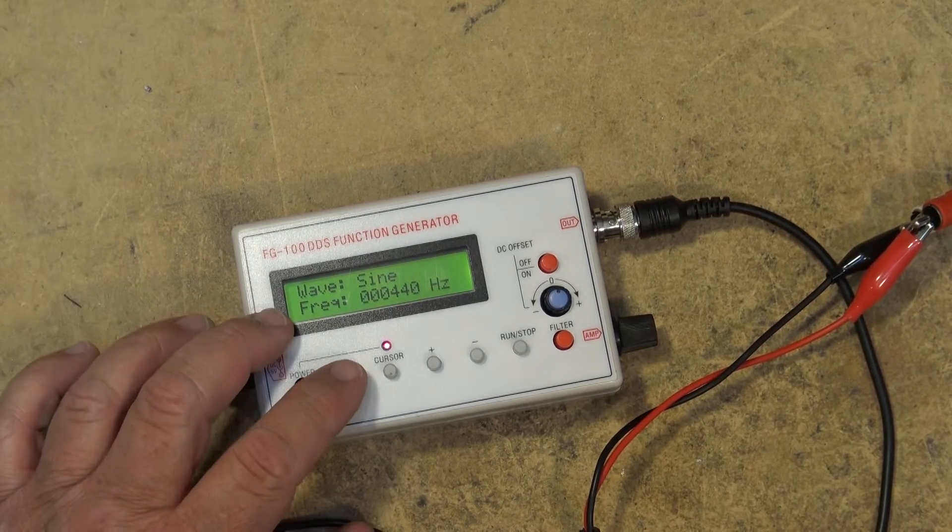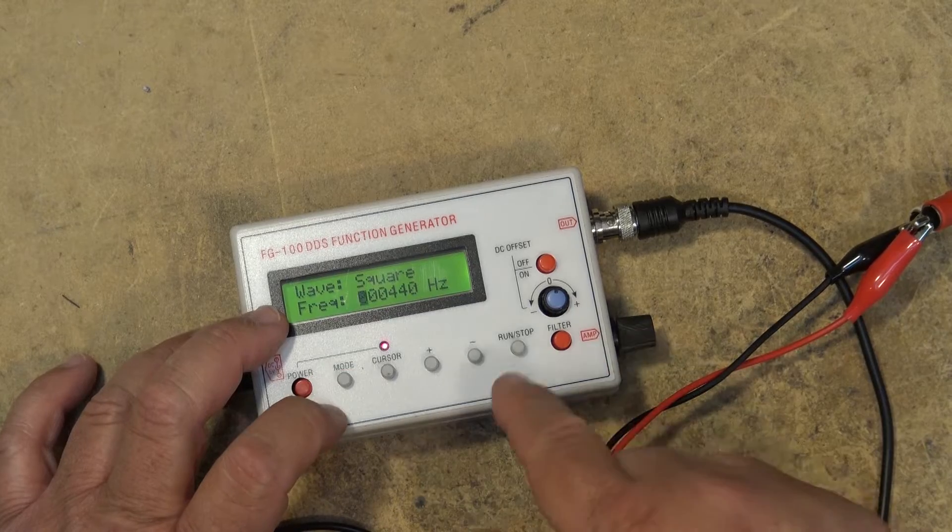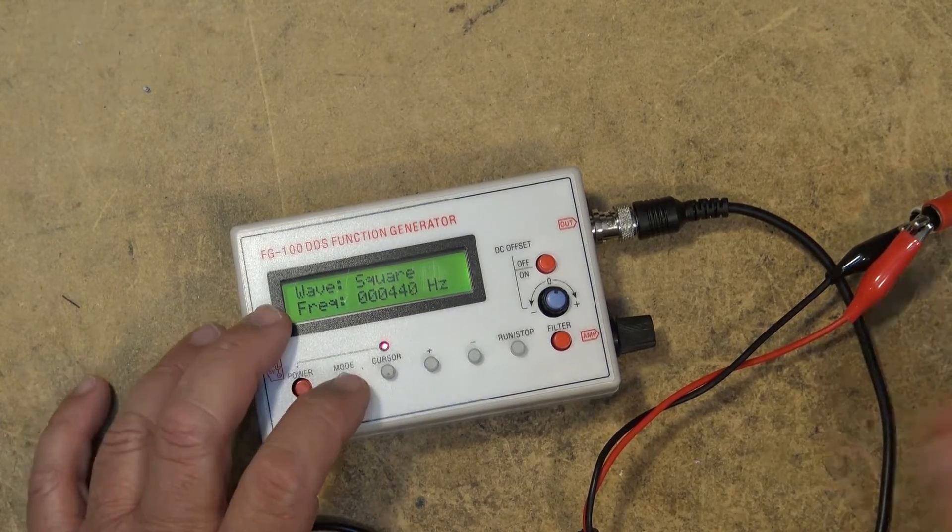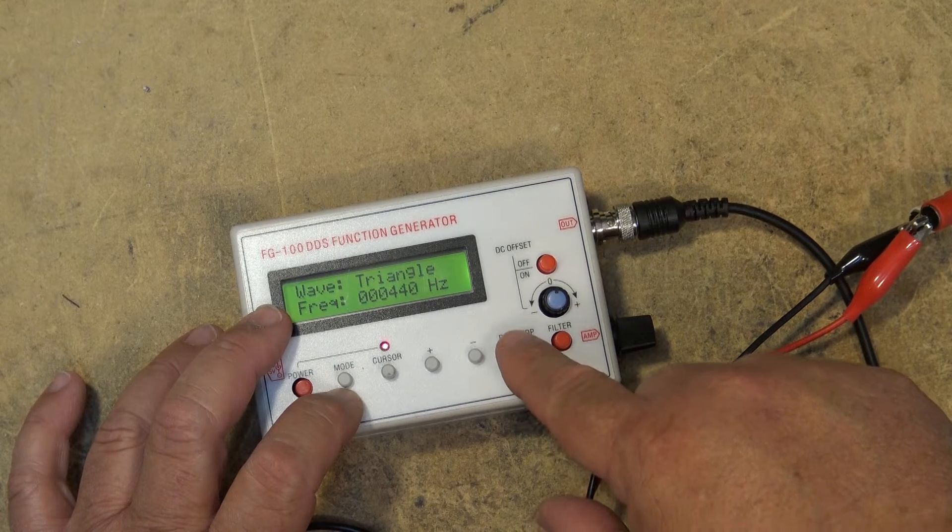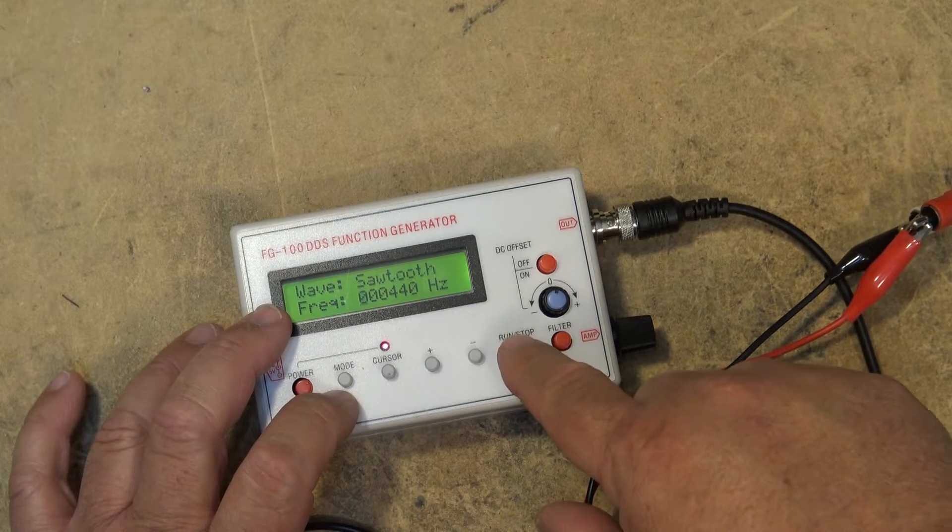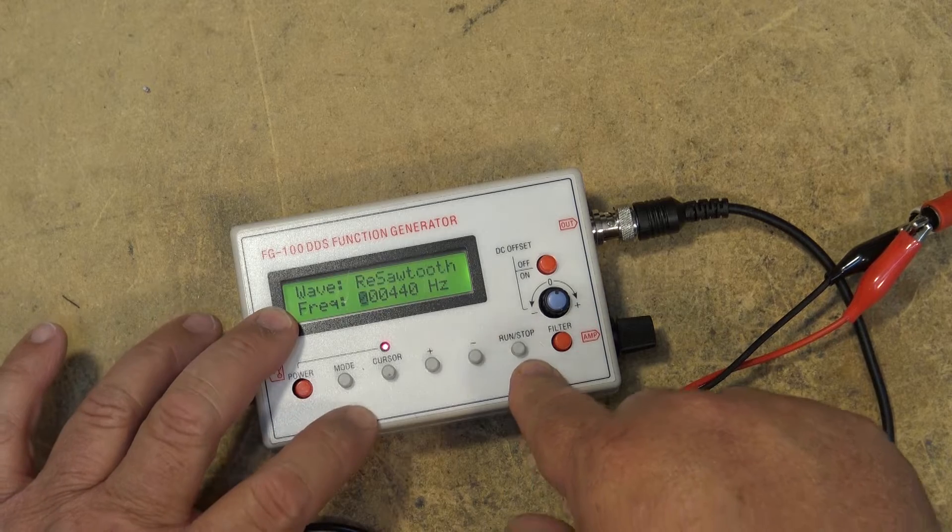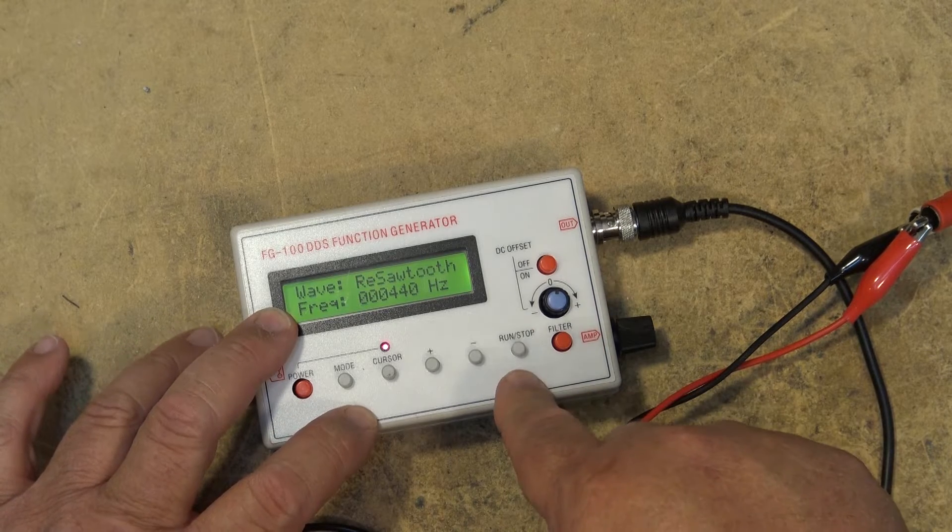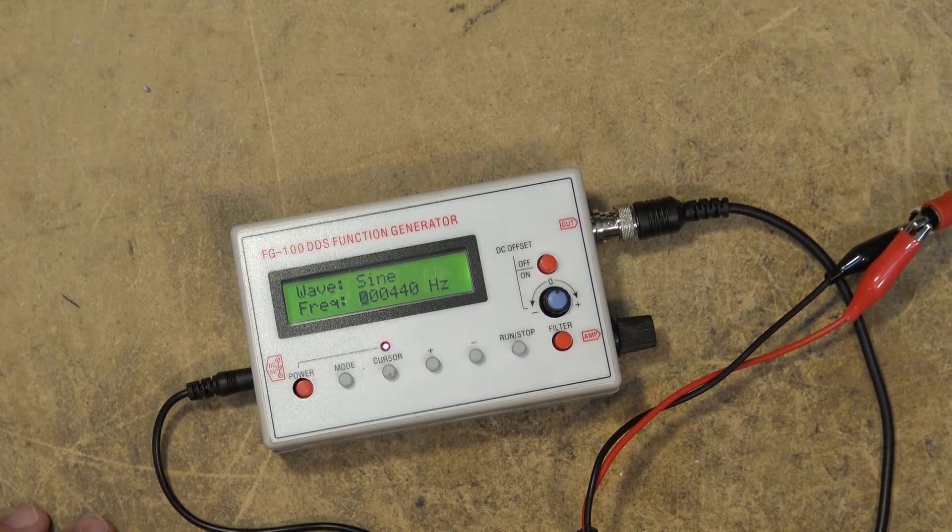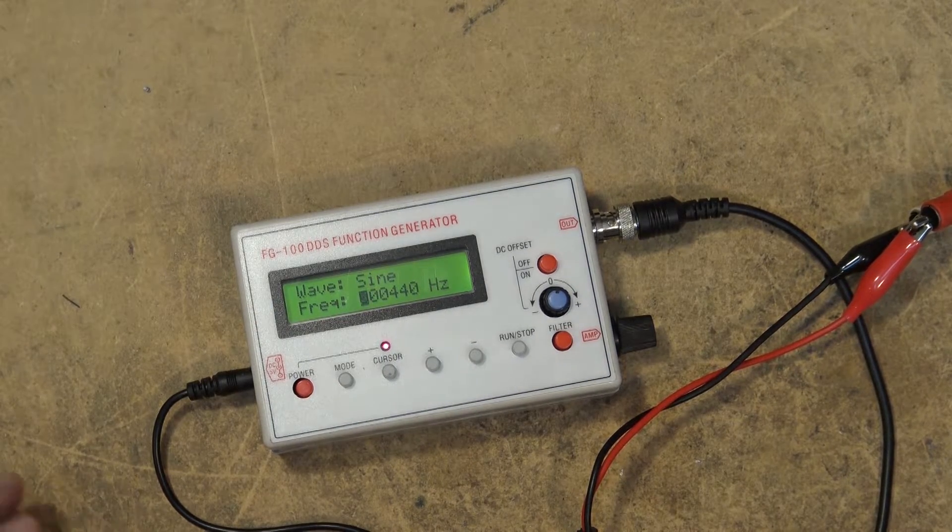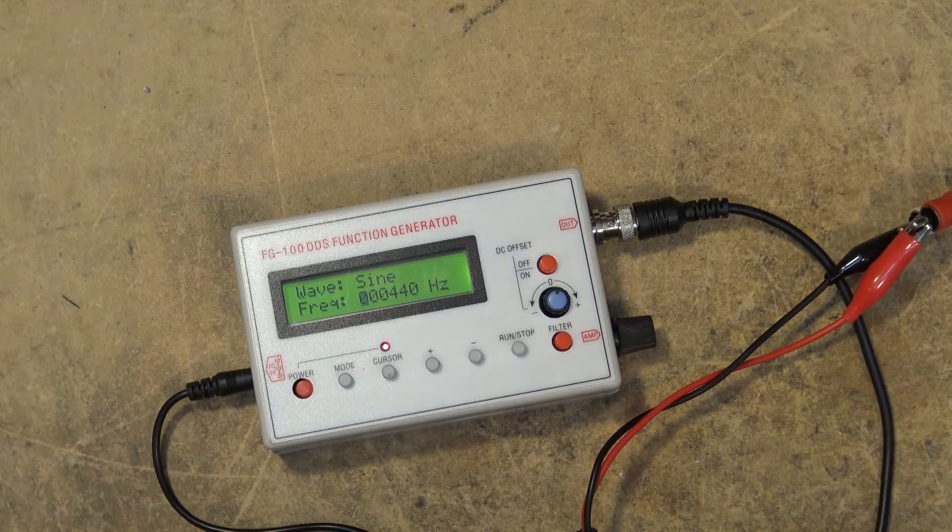Now if I want to change this to a square wave I have to turn it off. I can change it to a square wave. There's a square wave. A triangle wave. A sawtooth. And a re-sawtooth. And that's basically what this does. It generates tones, a sine wave or any type of signal that you could possibly want for testing your equipment.